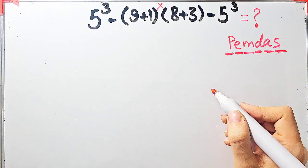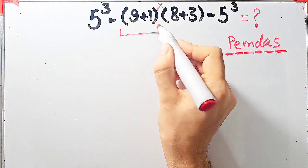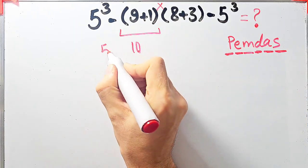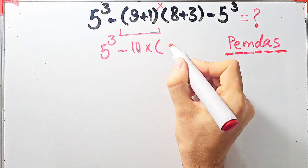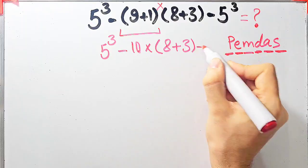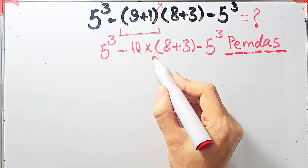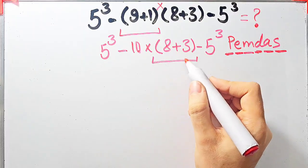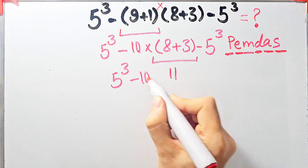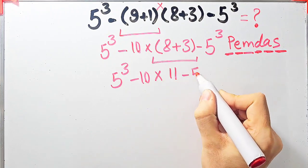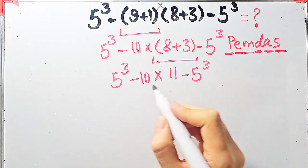According to the PEMDAS rule, first we simplify the parentheses: 9 plus 1 equals 10. Now we have 5 to the power of 3 minus 10, then times open parentheses, 8 plus 3, close parentheses, minus 5 to the power of 3. We simplify the remaining parentheses: 8 plus 3 equals 11. Now the question is 5 to the power of 3 minus 10, times 11, then minus 5 to the power of 3. Now we have exponent, subtraction, and multiplication. We simplify the exponent: 5 to the power of 3 equals 125.